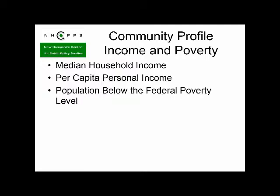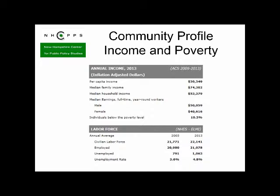For income and poverty, I'd suggest presenting statistics on median household income, per capita income, and the percent of population below the federal poverty level. This comes from the Community Profiles website for Concord. These tables all show the source of the data in parentheses — ACS stands for American Community Survey. It's a five-year average estimate for the period 2009 to 2013. You can also see labor force data at the bottom: civilian labor force, number of people employed, unemployment rate, and so forth.